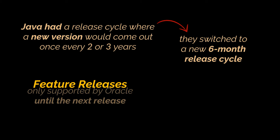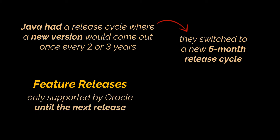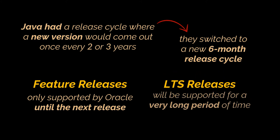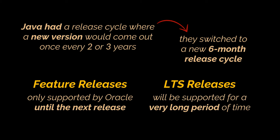So there are now two different types of releases: feature releases, which are only supported by Oracle until the next release pops up — i.e. for six months — and long-term support releases, aka LTS releases, which will be supported by Oracle for a very long period of time.